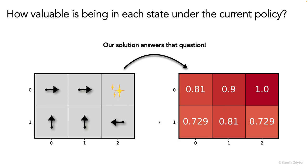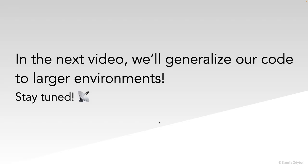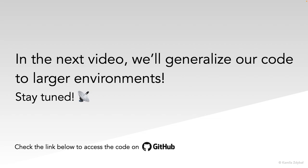So in the next video, we'll write a more general Python code that solves for the value function for an environment of any size. And we'll also add the ability to place arbitrary rewards in various states. You can check the link below to access the Jupyter notebook with the code from this video. And if you'd like to support my efforts in creating open source educational materials like this one, you can also find the link below. So stay tuned for the second part.